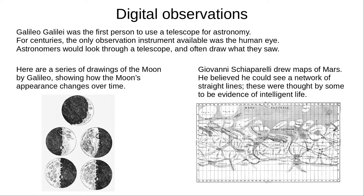When Galileo Galilei first used the telescope for astronomy, he still had to use only his eyes to see his observations. For centuries, astronomers would sketch what they saw through their telescopes. Here we can see a page from Galileo's sketchbook showing the moon's changing appearance over time, and Giovanni Schiaparelli's sketches of Mars, including straight lines, or channels as he called them.